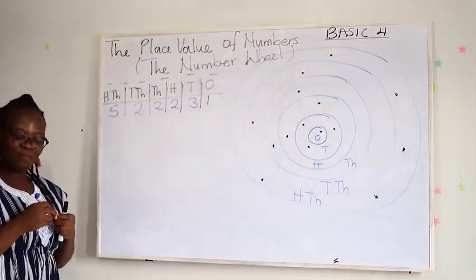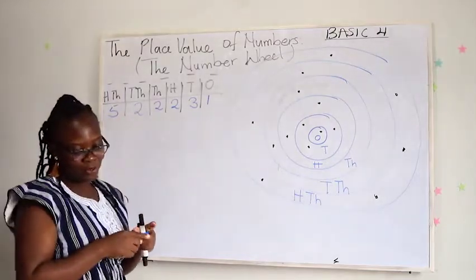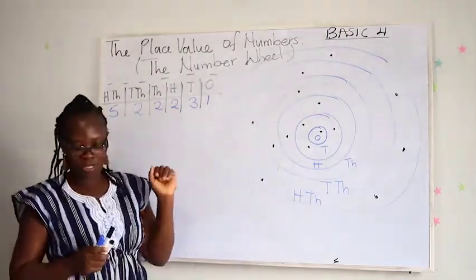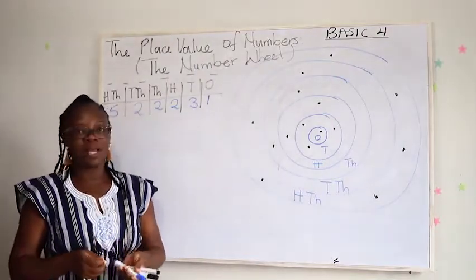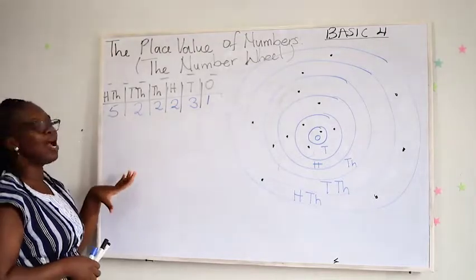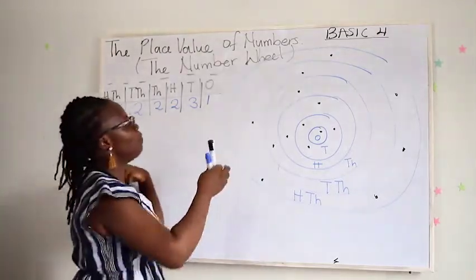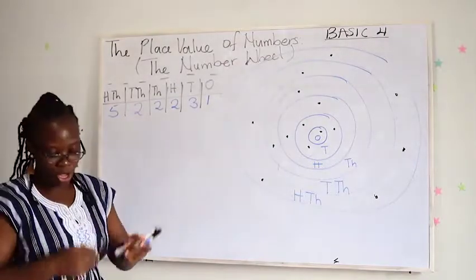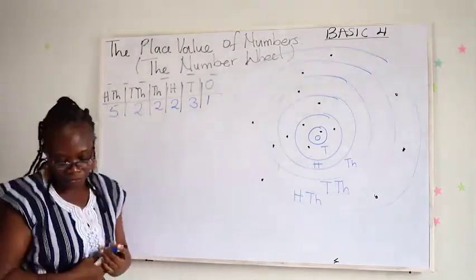So I have been able to represent the pebbles in the ring on my place value chart. The same way, if I give you a place value chart and ask you to represent it on a wheel, you should be able to do a similar thing.